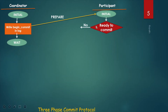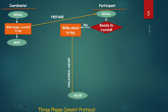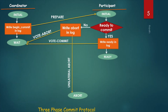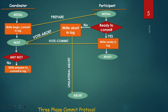The participant checks whether it is ready to commit or not. If no — that is, the participant is not ready to commit — it writes in its own log, takes a unilateral abort, goes to the abort state, and sends a vote-abort message to the coordinator. But if the participant is ready to commit, it writes 'ready' in its own log, goes to the ready state, and sends a vote-commit message to the coordinator. The coordinator then checks whether any vote-abort message has been received.